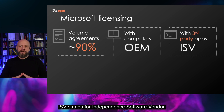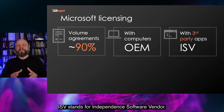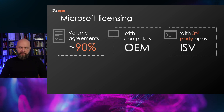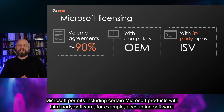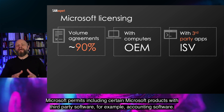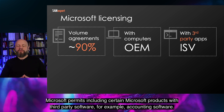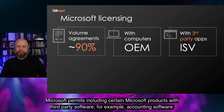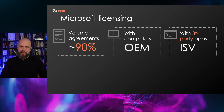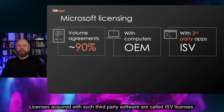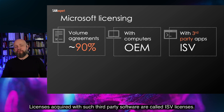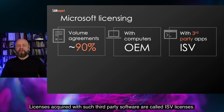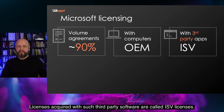ISV stands for Independent Software Vendor. Microsoft permits including certain Microsoft products with third-party software — for example, accounting software. Licenses acquired with such third-party software are called ISV licenses.